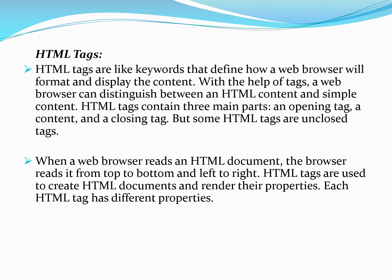HTML tags are the keywords that define how a web browser will format and display the content. If you want to give information to the computer to display something, you use tags. The computer identifies HTML content by what is inside a tag — if you put something inside the tag, that is your HTML content; what is not inside the tag is simple content. An HTML tag has three parts: opening tag, content, and closing tag.